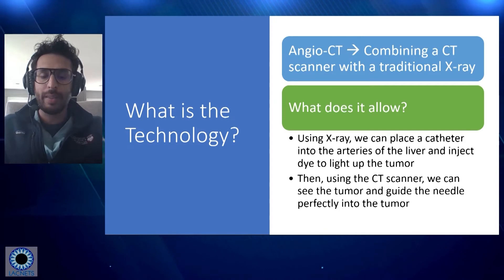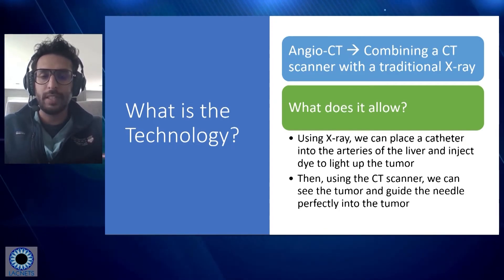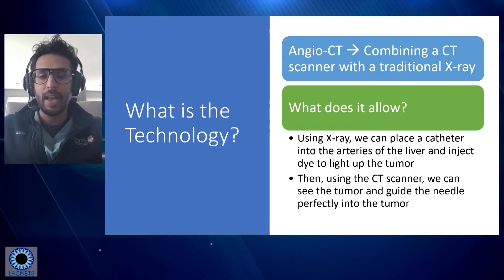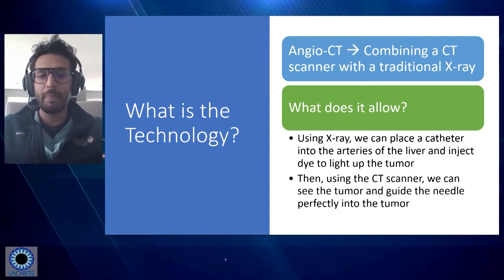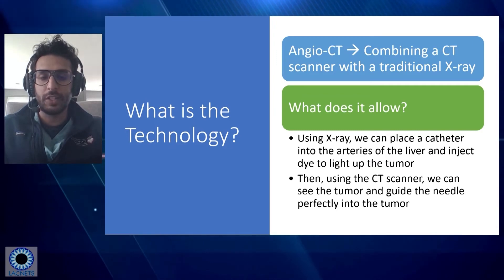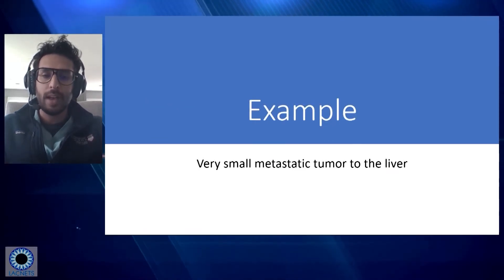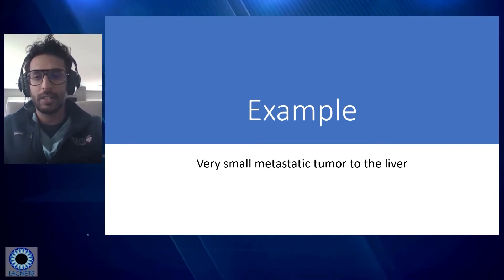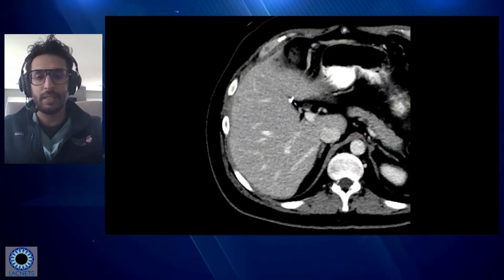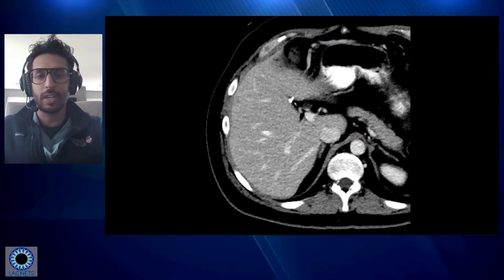That allows us to utilize the strengths of each imaging modality. With x-ray, we can place a catheter into the arteries of the liver and inject dye directly into the liver to light it up. Then using the CT scanner, we can visualize it perfectly and guide a needle into the tumor. We've written this up and published the technique in our journal to show others the method we're utilizing.